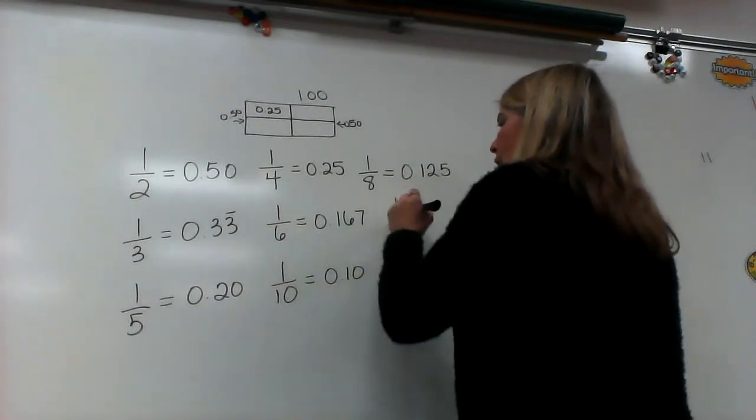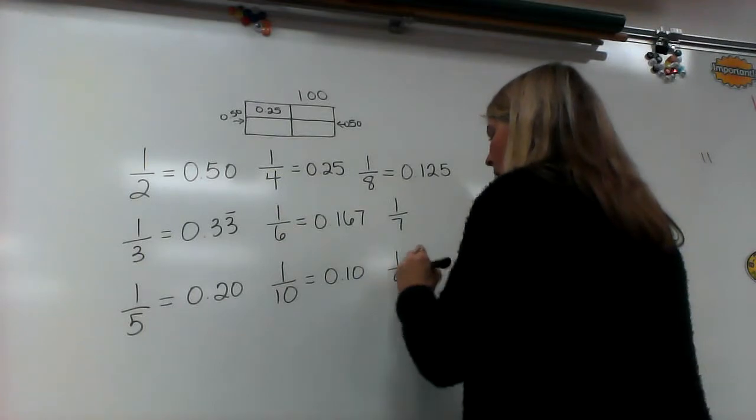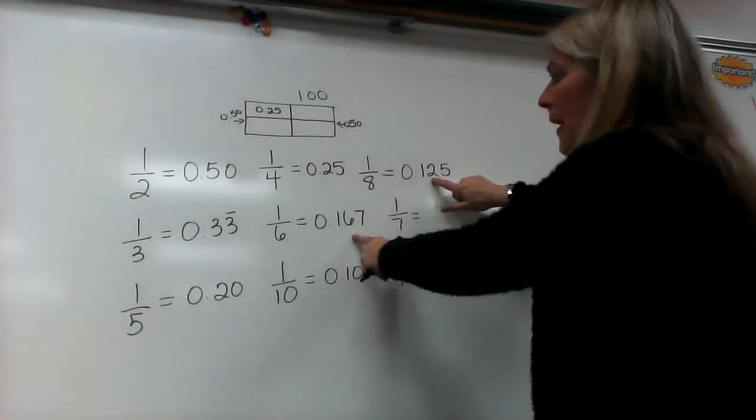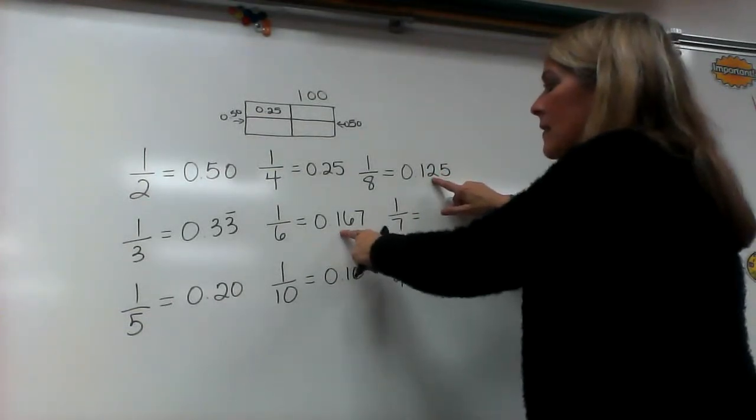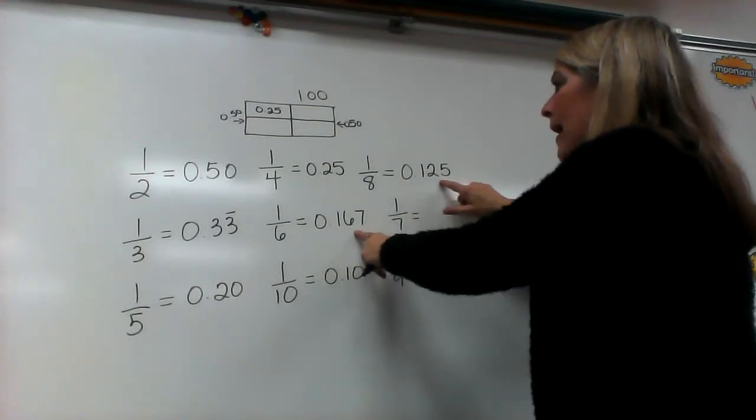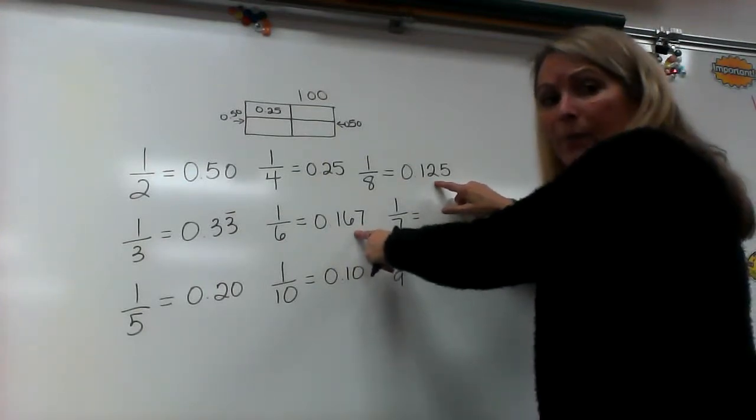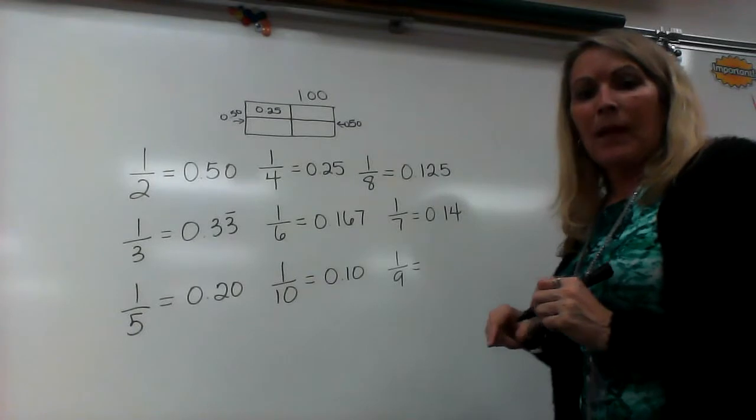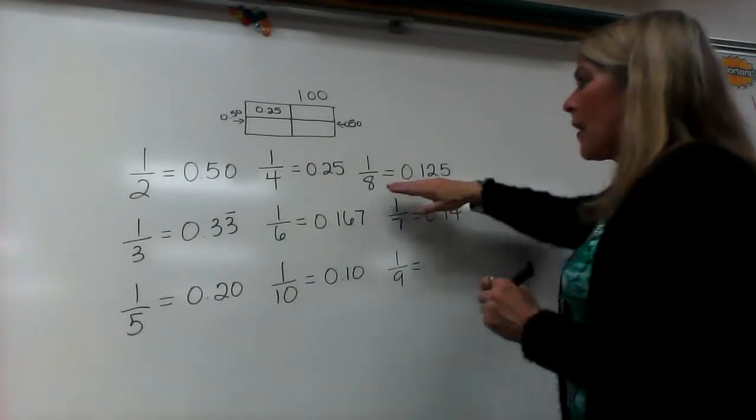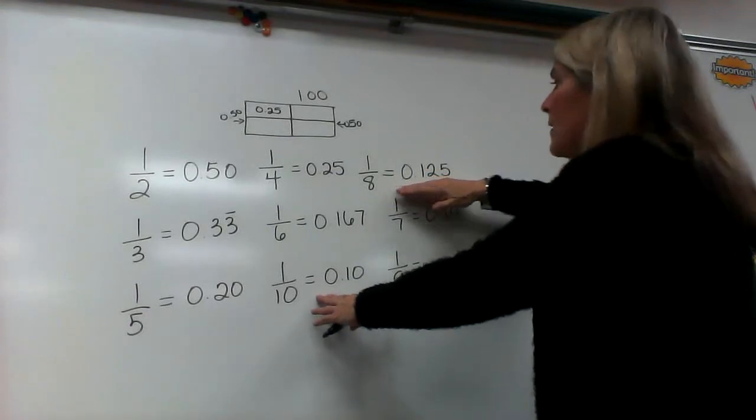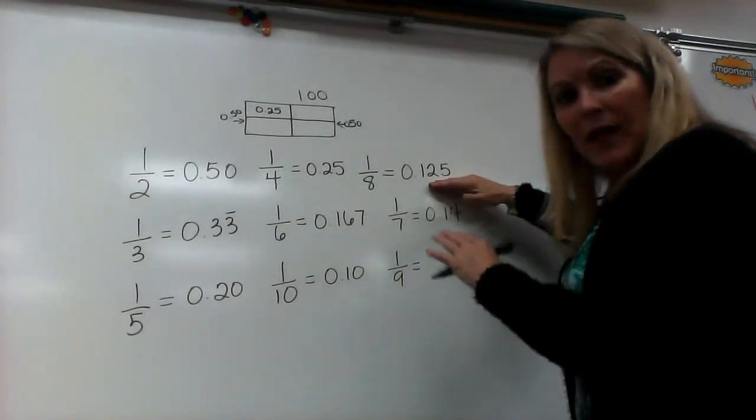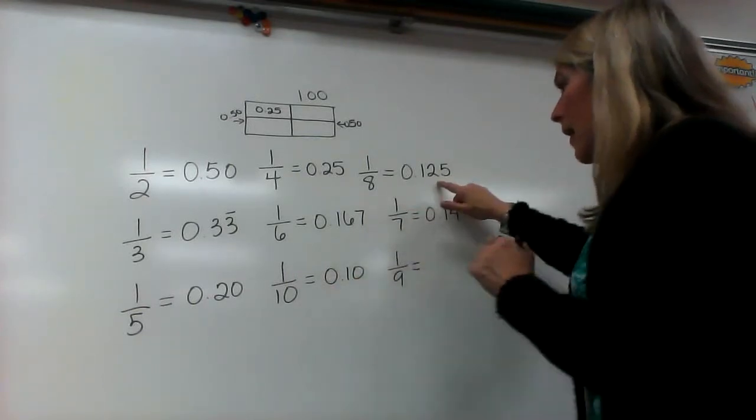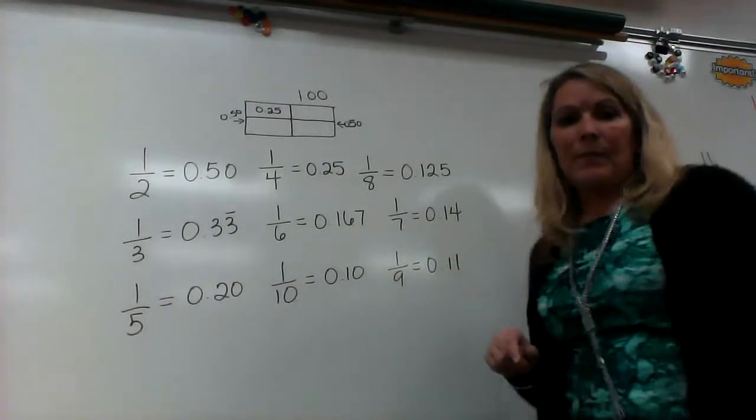And, we can also figure out where one-seventh and one-ninth would fall in. Now, remember, these are not going to be exact. But, a seventh is going to fall in between my sixth and my eighths. If my sixth is sixteen and two-thirds, and my eighths are twelve and a half, what's right in the middle of that? Well, what's right in the middle of twelve and sixteen is fourteen-hundredths. And then, with ninths, they're going to fall in between the eighths and the tenths. And so, I've got twelve and a half percent, or a hundred and twenty-five thousandths, and then ten. What falls in between ten and twelve? Well, eleven does.